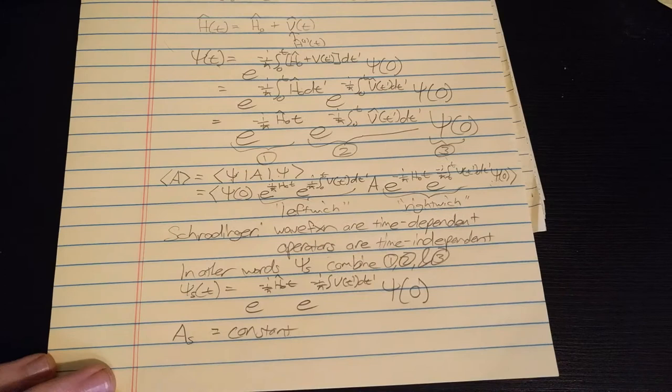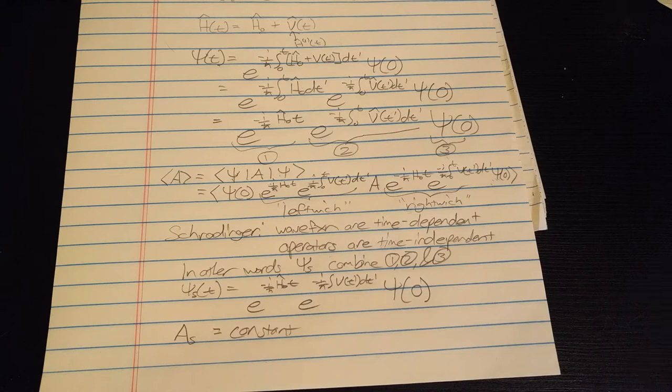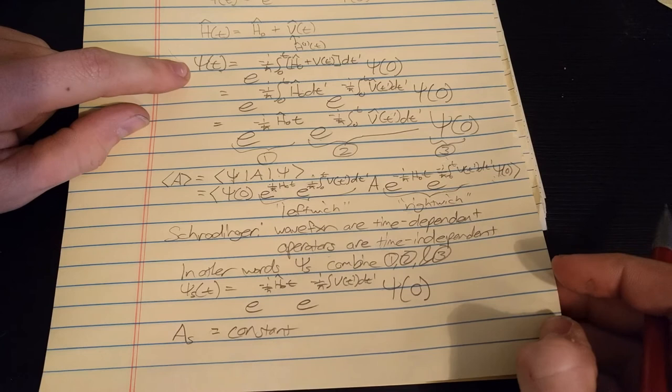The Schrödinger picture is what most people learn in undergrad quantum mechanics, but typically they won't tell you you're learning the Schrödinger picture. You later figure that out after being completely lost for a long time. I'm going to rewrite this most general wave function and label what 1, 2, and 3 are.